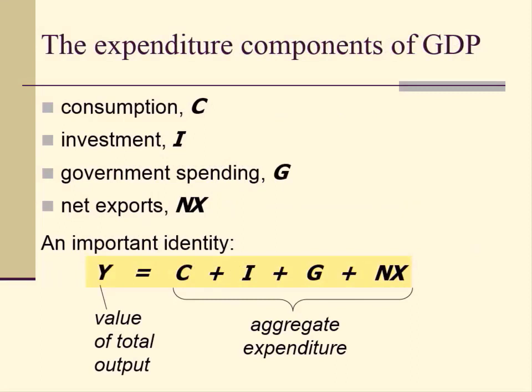Now let's look at the expenditure components of GDP. In an open economy, there are four components: one, consumption; two, investment; three, government spending; and four, net exports. GDP equals total expenditure on final goods and services, which equals C plus I plus G plus net exports — known as aggregate expenditure. The important identity is Y equals C plus I plus G plus net exports, where the left-hand side is total output value and the right-hand side is aggregate expenditure.